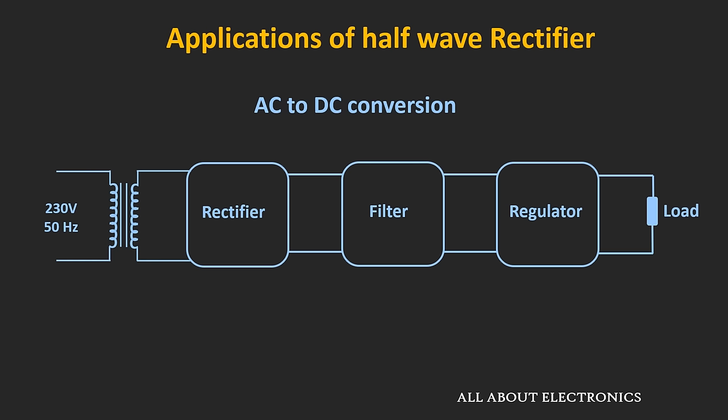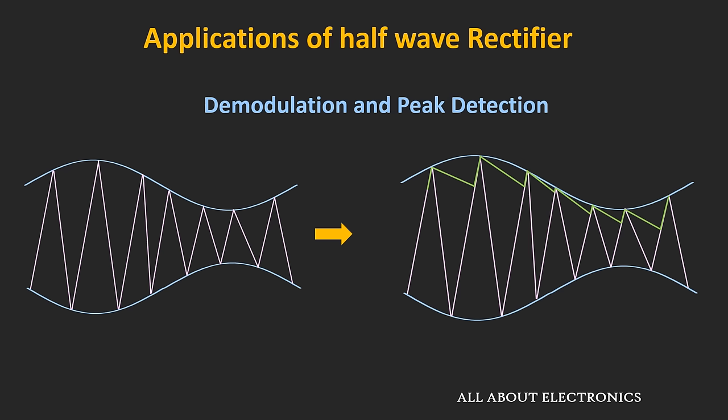In practical cases, this half wave rectifier circuit is rarely used because it has very poor efficiency as well as large ripple. So in practical cases, full wave rectifier circuits are more preferred over half wave rectifier circuits. The next application of this half wave rectifier is in demodulation of the signal. If we apply a modulated signal to this half wave rectifier circuit, it is possible to recover the envelope from the carrier frequency.